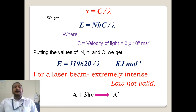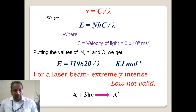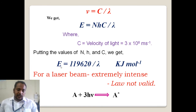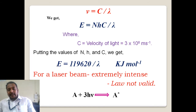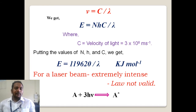Putting the values of N, h, and c into the equation: E = (6.023 × 10²³)(6.625 × 10⁻³⁴)(3 × 10⁸) / λ. Doing the calculations gives E = 119620 / λ kilojoules per mole. Using this equation, it is possible to determine the energy of radiation if you know the wavelength, or conversely to determine the wavelength if you know the energy.